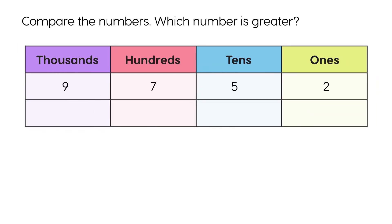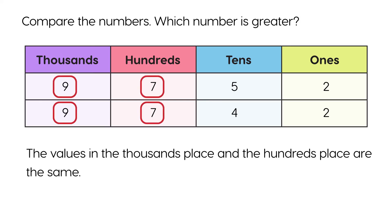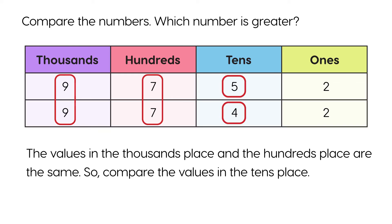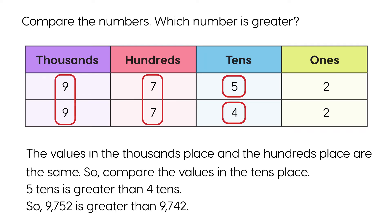Compare the numbers. Which number is greater? The values in the thousands place and the hundreds place are the same. So, compare the values in the tens place. Five tens is greater than four tens. So, nine thousand seven hundred fifty-two is greater than nine thousand seven hundred forty-two.